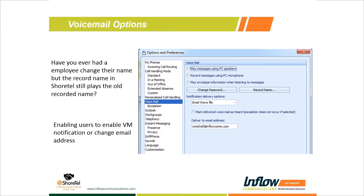A common issue with voicemail options inside Communicator is when a new employee is added or a person changes their name. When you hit their voicemail it still plays the wrong name, or when using the dial-by-name directory — for example, typing in 'Christina' and it says 'Christina Mitchell' when her last name is now 'Christina Moore' — changing the recorded name is a little different from the system.